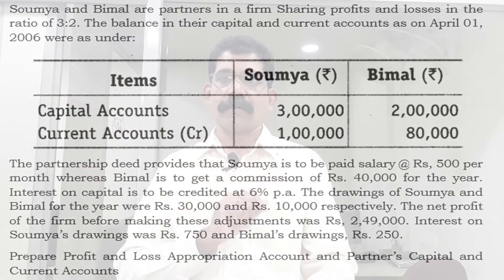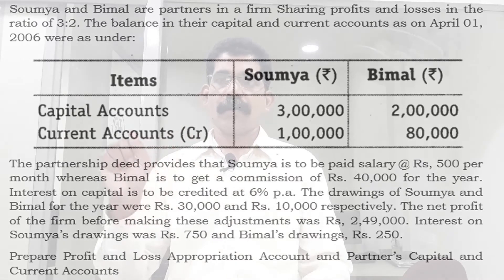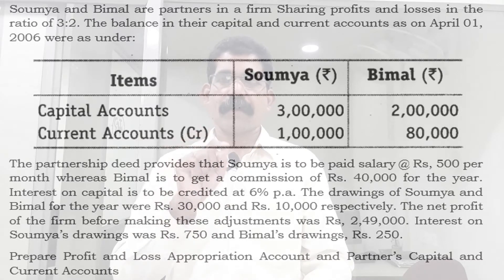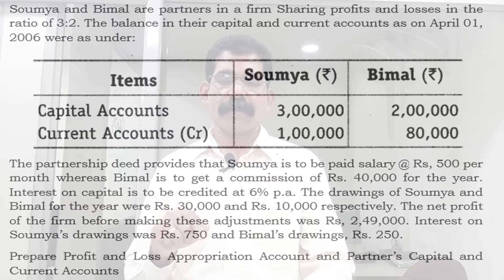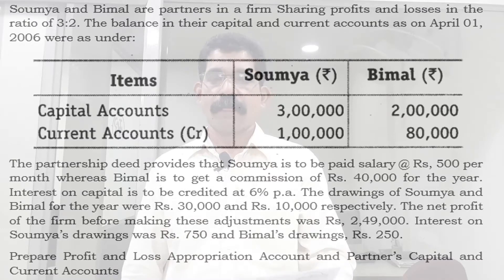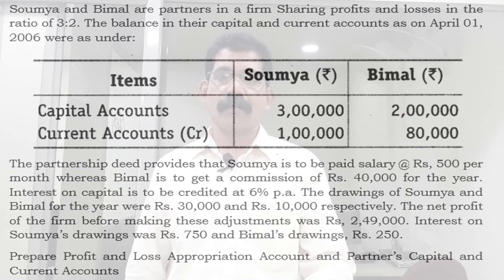In the item column: Capital accounts — Soumya: 3 lakhs, Bimel: 2 lakhs. The new partnership deed provides that Soumya is to be paid a salary of Rs. 500 per month, whereas Bimel is to get a commission of Rs. 40,000 for the year.